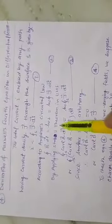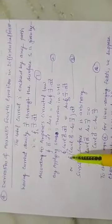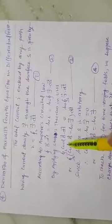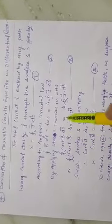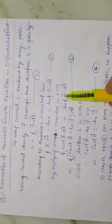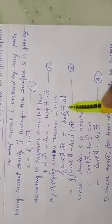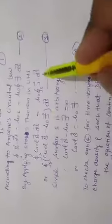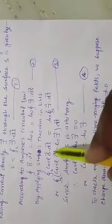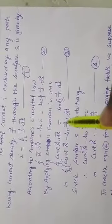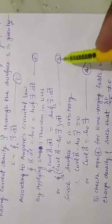On applying Stokes' theorem to the LHS, the closed integration over surface S of curl B vector dot dS vector is equal to μ₀ times the closed integration over S of J vector dot dS vector. Or: closed integration of (curl B vector minus μ₀ J vector) dot dS equals zero. Equation number 3.